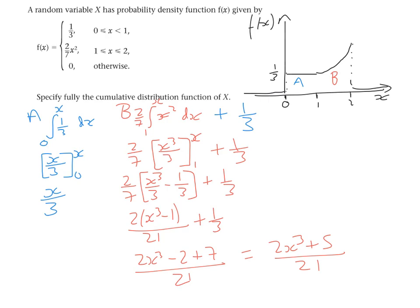This function tells us the cumulative probability for any x between 1 and 2, measured from the very start. To verify: substituting in the upper limit of 2 gives (2×8 + 5)/21 = (16 + 5)/21 = 21/21 = 1. So we know we've done it correctly.